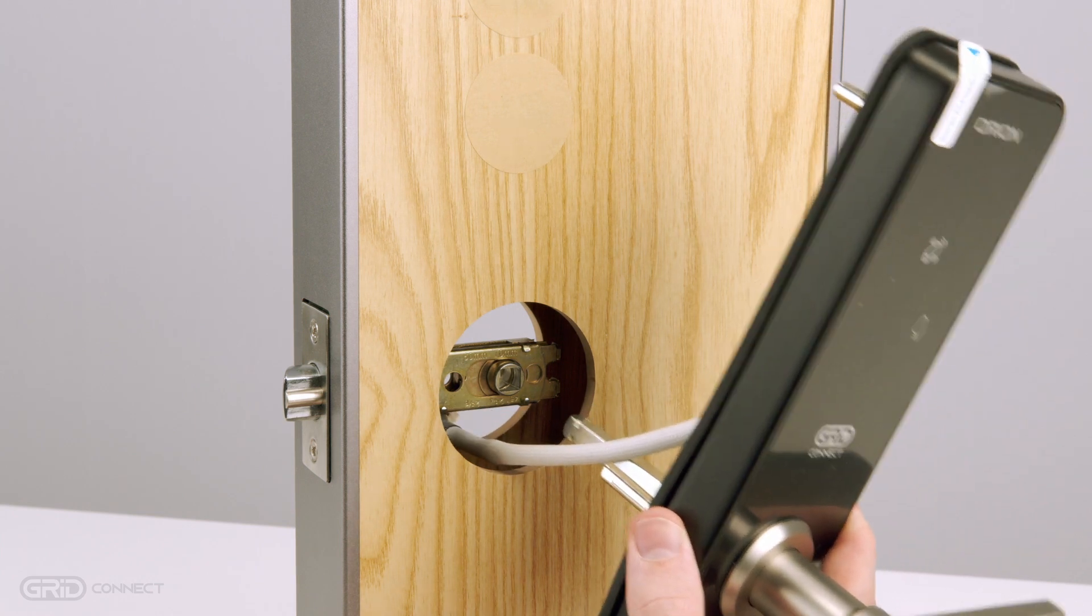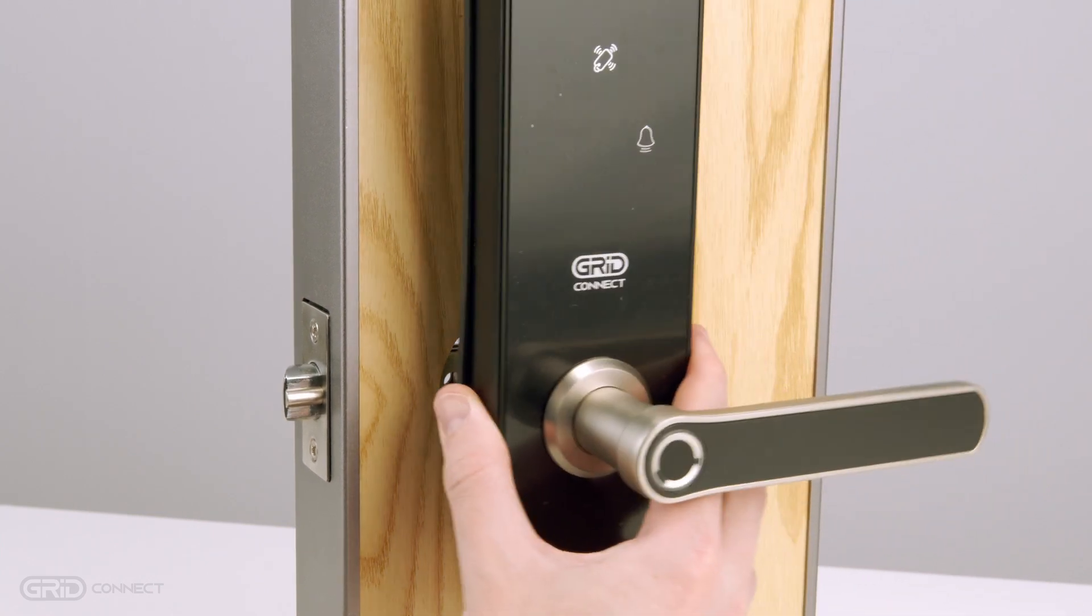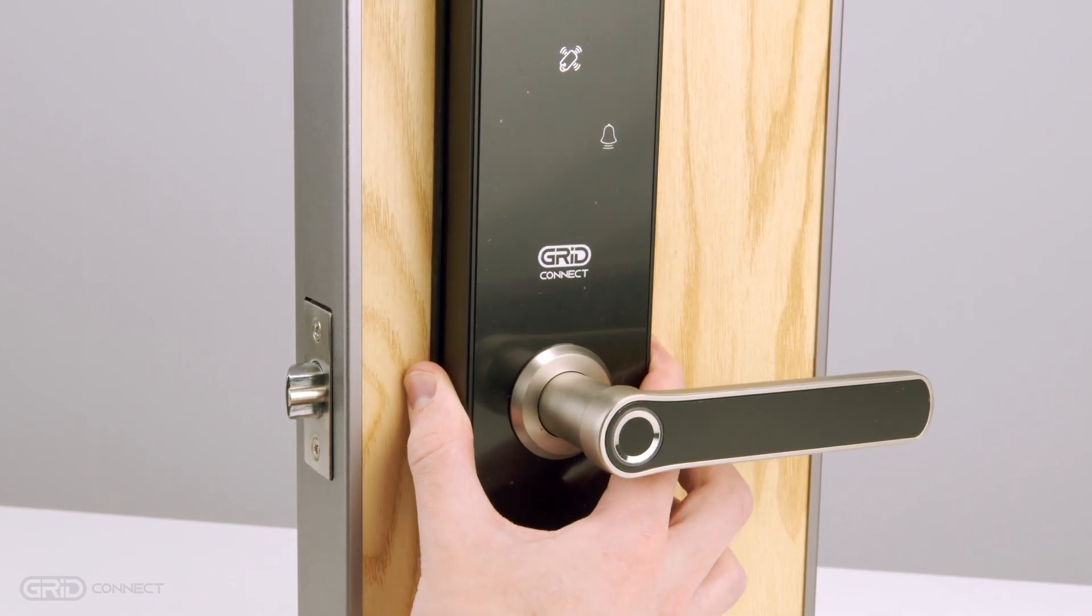Align the spindle, cable, and standoffs with the holes in your door and latch. Push the front panel in until it is flush with the door and hold it there while we complete the next step.